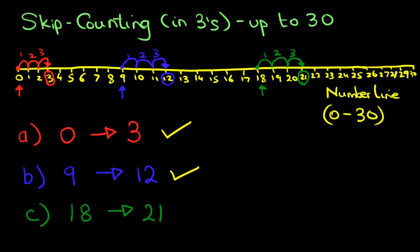So the number after 18 when counting in threes is 21. So that is skip counting in threes, and we've done that to numbers up to 30.